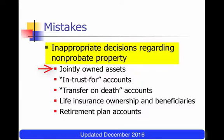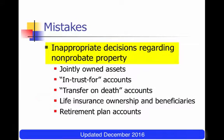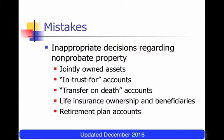The first thing on the list is inappropriate decisions regarding non-probate property. We know that jointly owned property with rights of survivorship will pass to the surviving owner no matter what the will says, so the will doesn't control that. If you have too much jointly owned property, that could make the will ineffective. The same is true for in-trust-for accounts, transfer-on-death accounts, life insurance beneficiary designations, and retirement plan accounts. I'll be going into additional mistakes in the next segment.